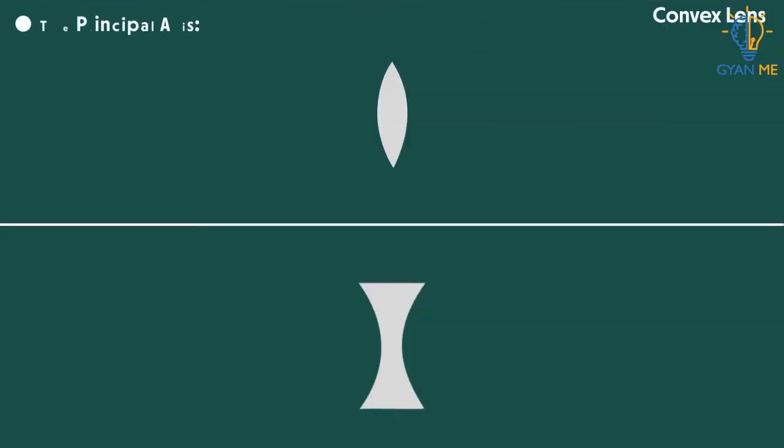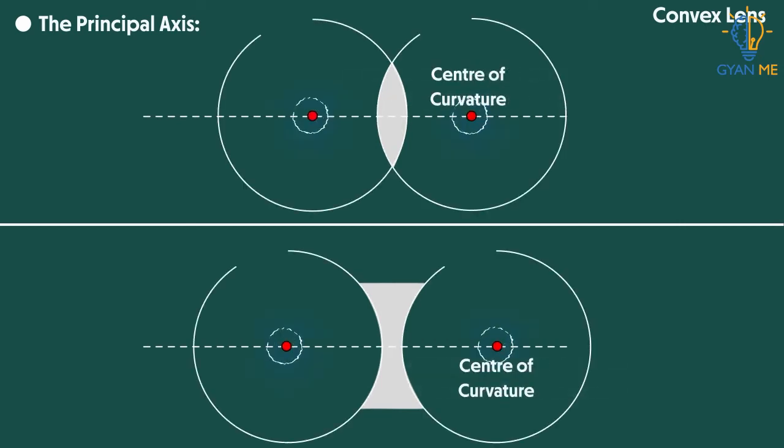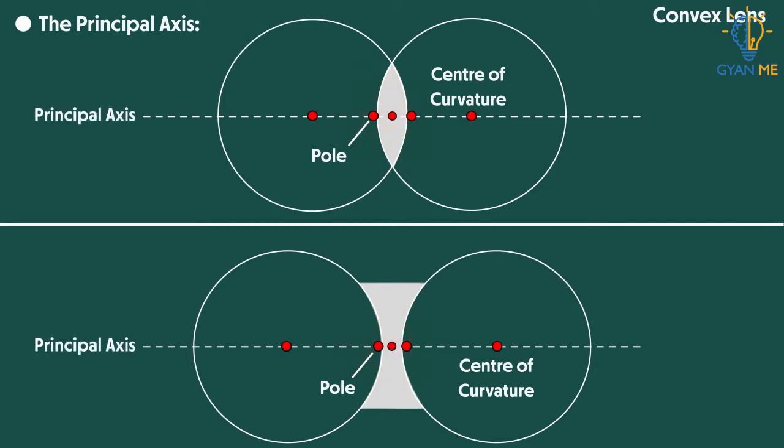The principal axis is an imaginary line that passes through the center of curvature and the pole of the lens. Yes, this imaginary line passing from the center of the lens is the principal axis.